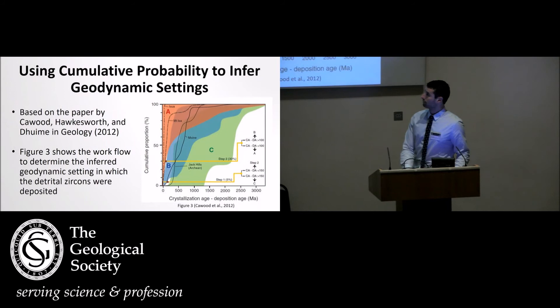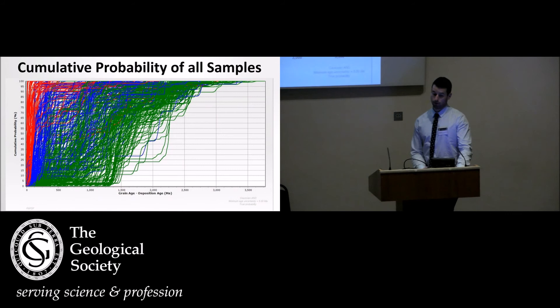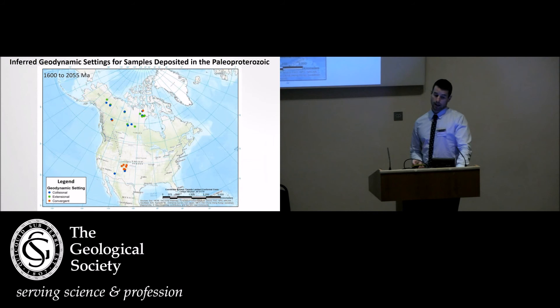And then finally, just a quick note on using cumulative probability to infer geodynamic settings. We can do this based on the paper by Cawood, Hawkesworth and Dhuime in Geology 2012. Figure three just shows the workflow process for doing this. This is a cumulative probability plot for all my samples. Red represents convergent tectonic settings, blue is collisional, and green is extensional. Plotting these essentially helps us quality check our plate tectonic model.